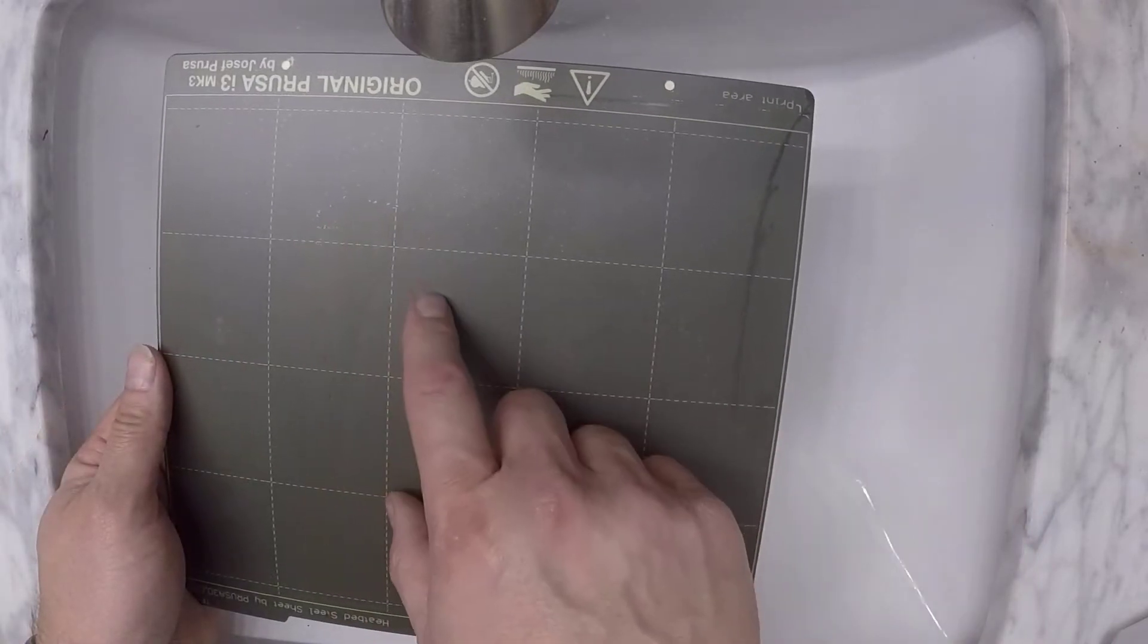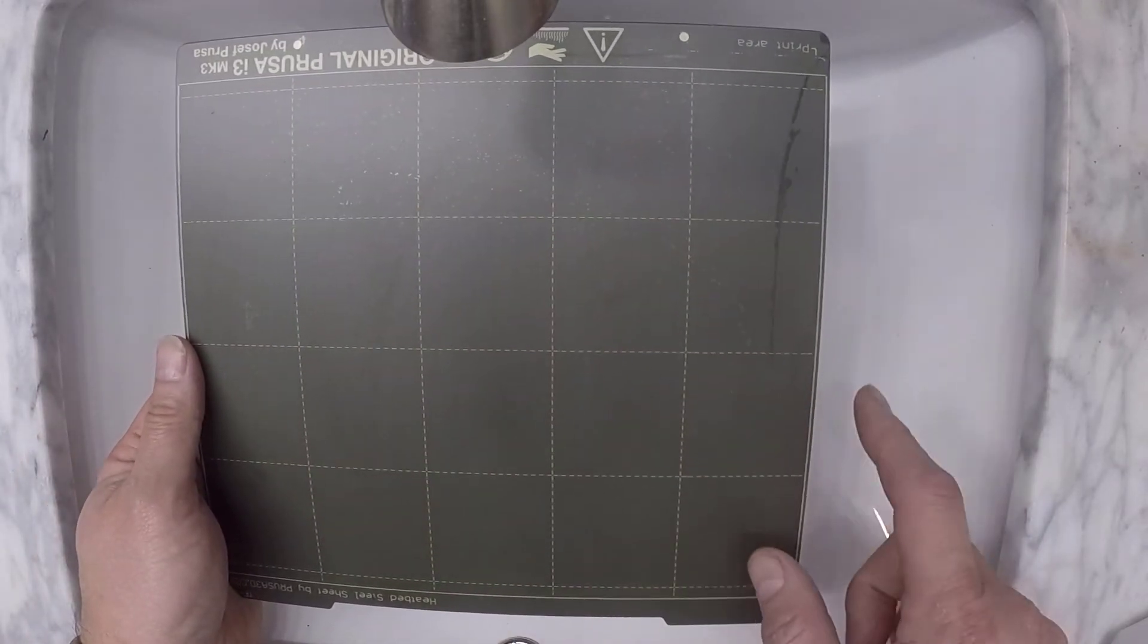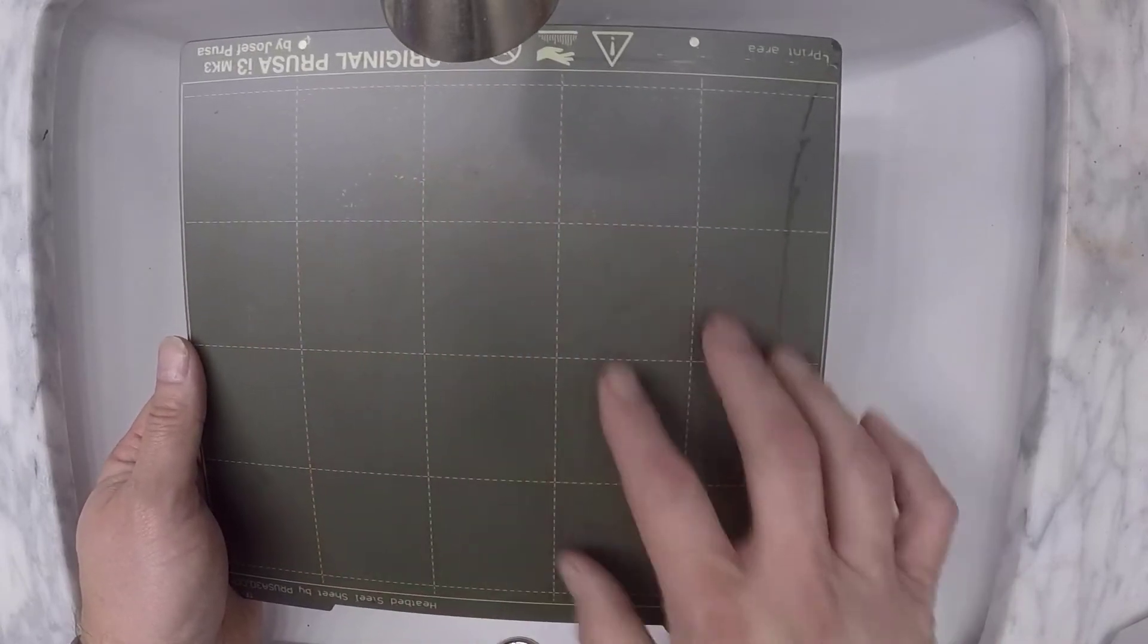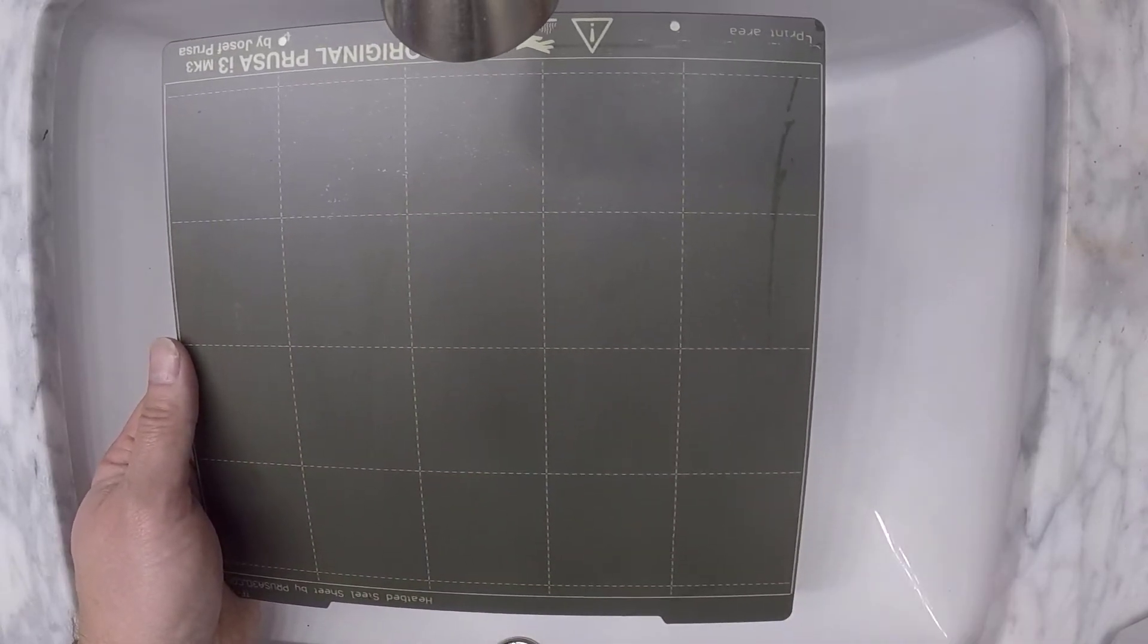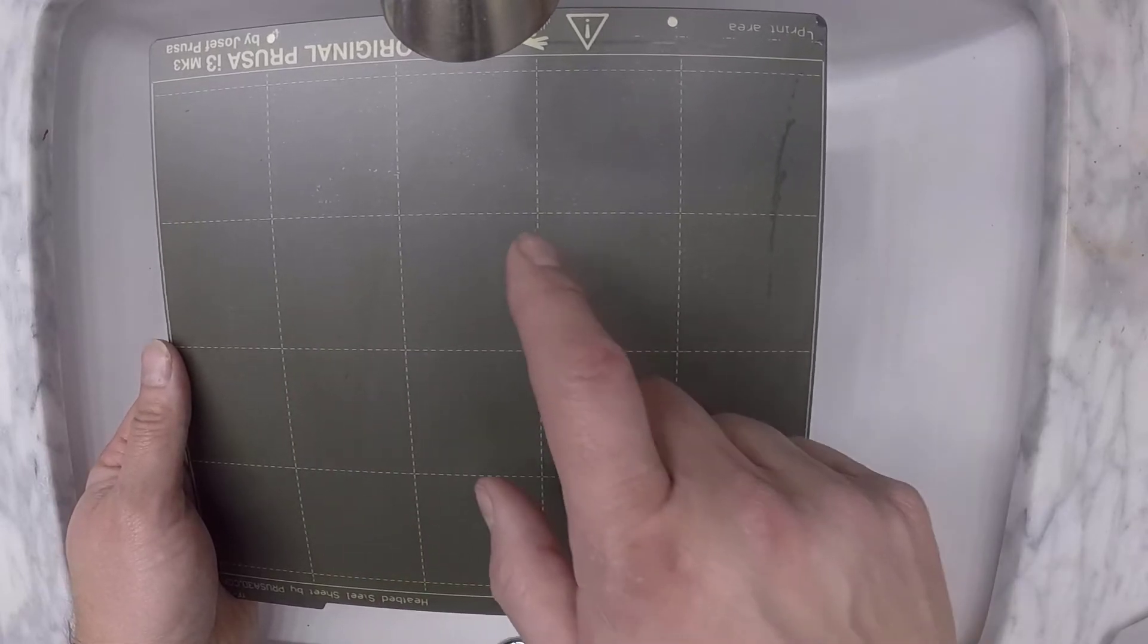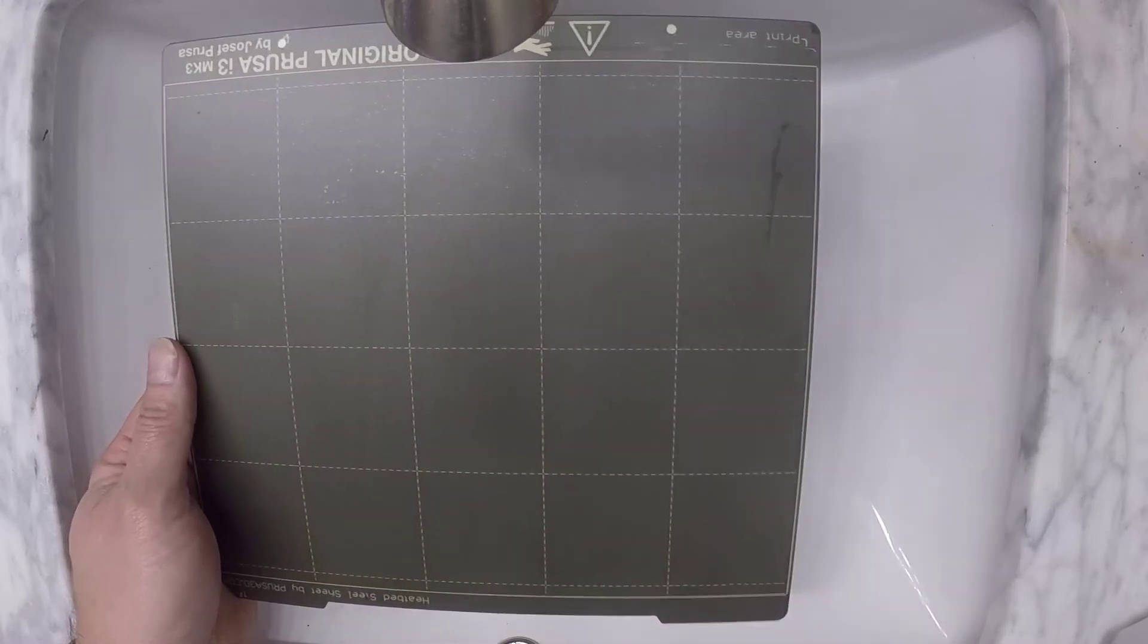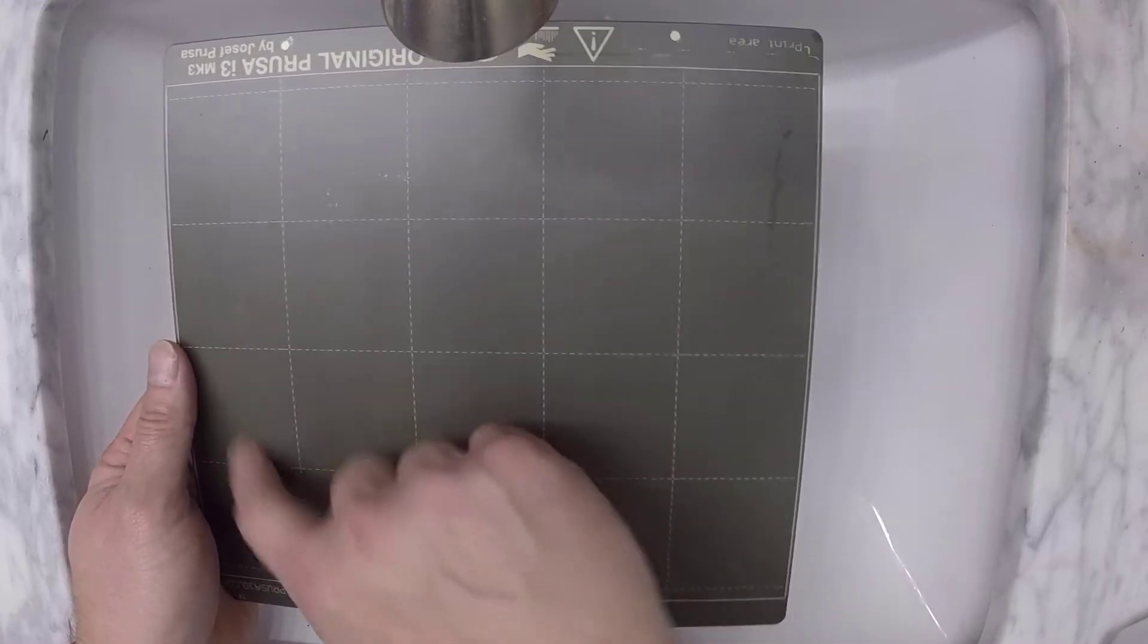And this is a second build plate. Well, you remember when we saw the other one, the PEI on that looked pretty new as well. It stays really clean. That hairspray really protects it. So it works to help with adhesion. It works to help as a release agent,